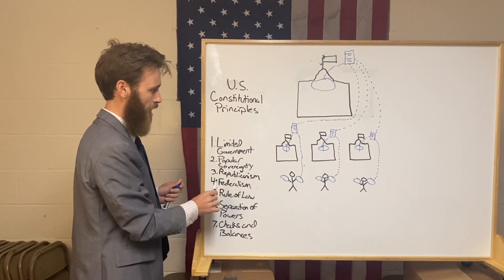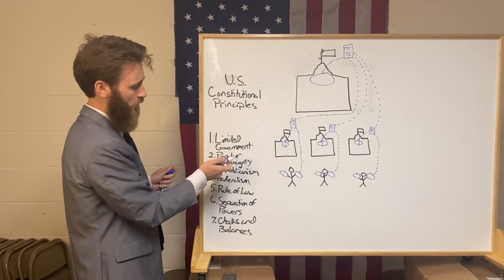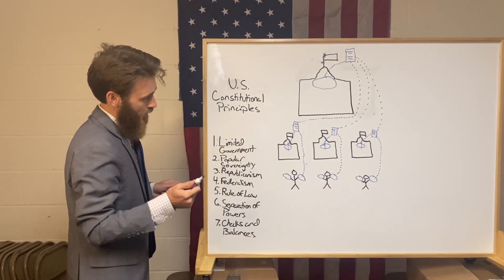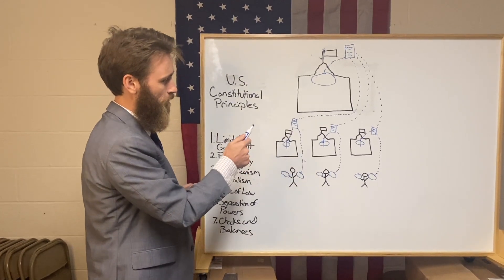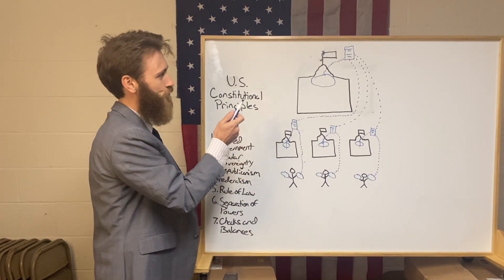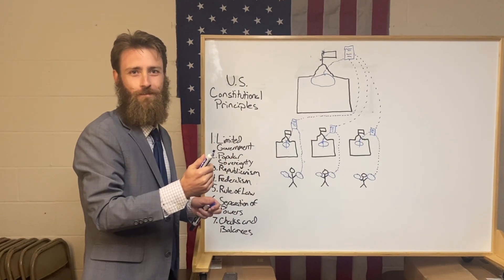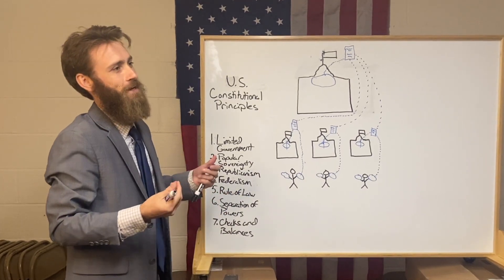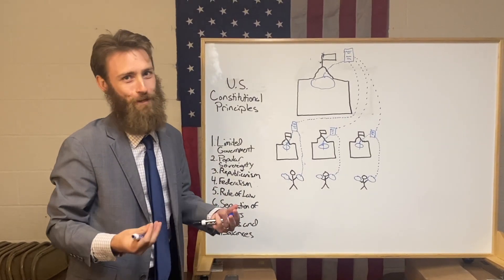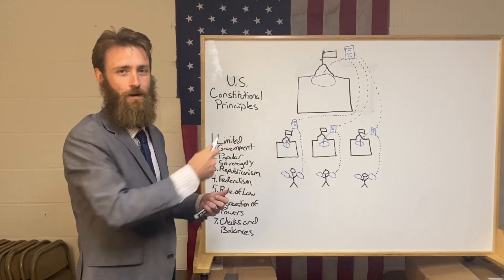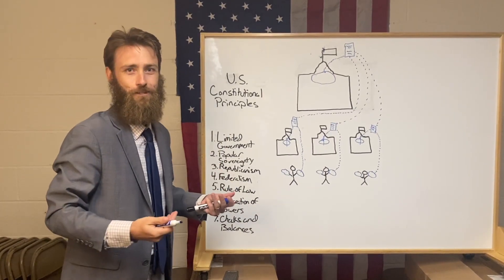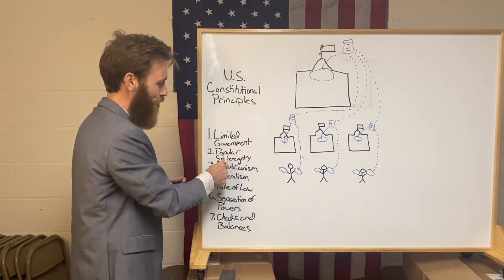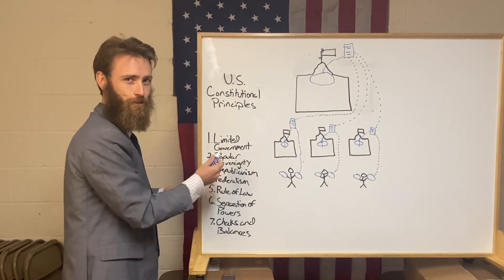Popular sovereignty is another principle of the U.S. Constitution. It means that even though the governments have power, they are still under the authority of the people. Even though the power the government has is limited in the first place, they don't get to use it however they want. Even that little power that the people have given to the governments — the government is still under the sovereignty of the people.